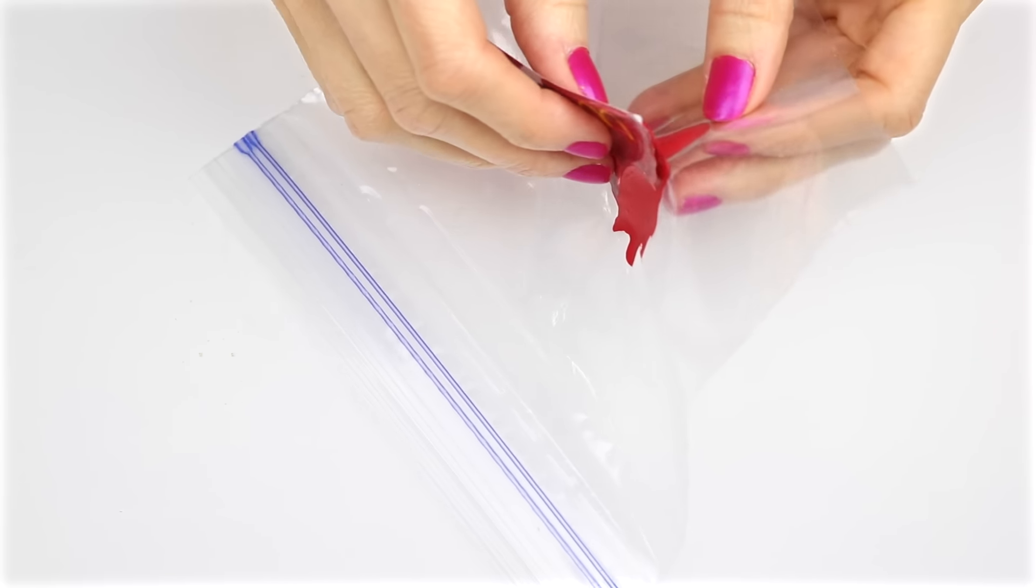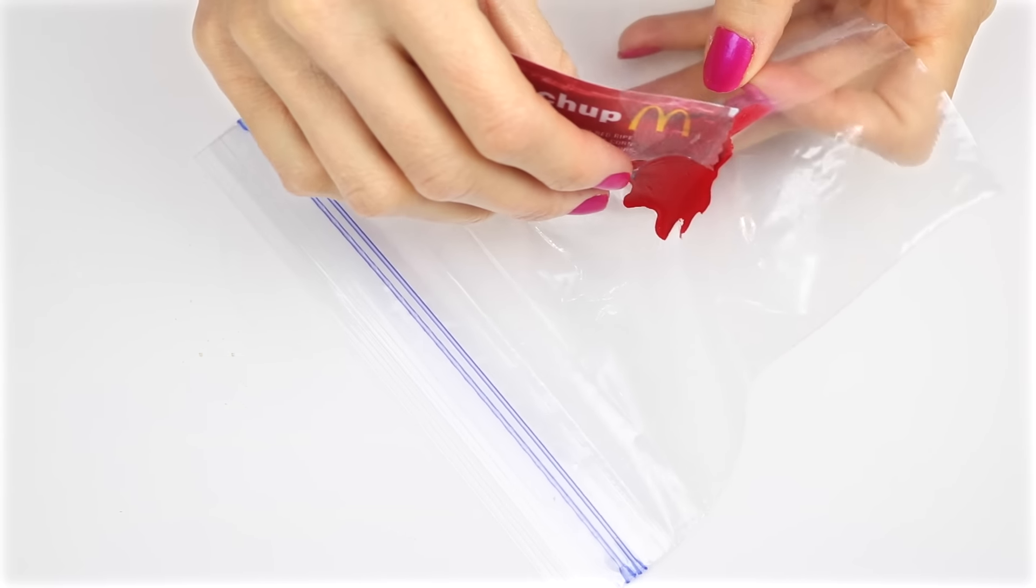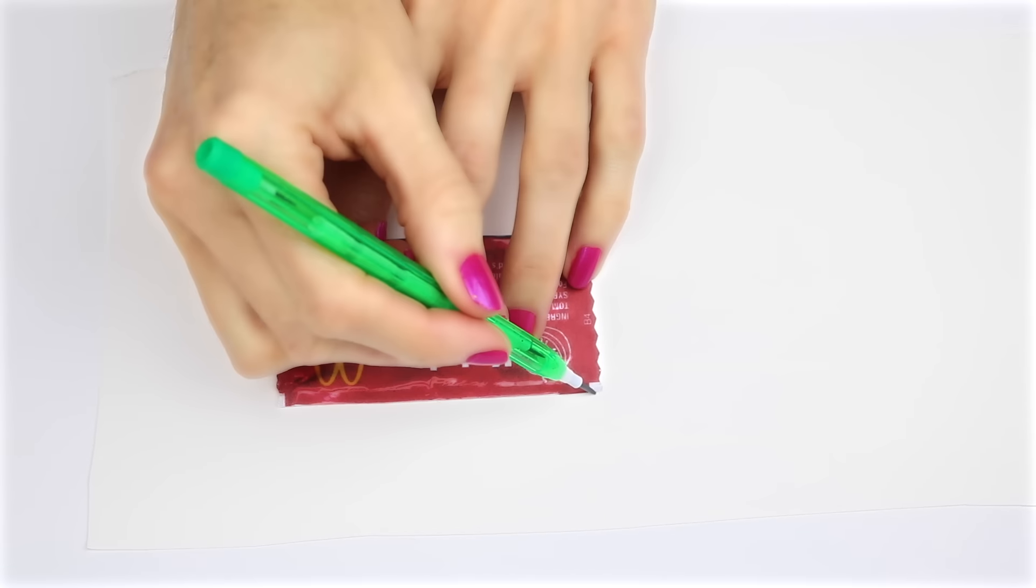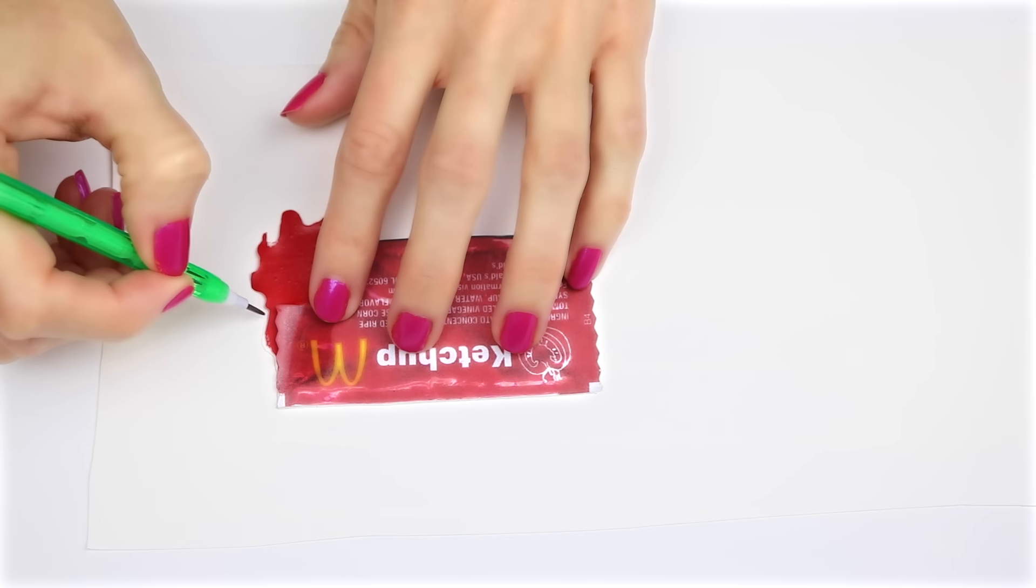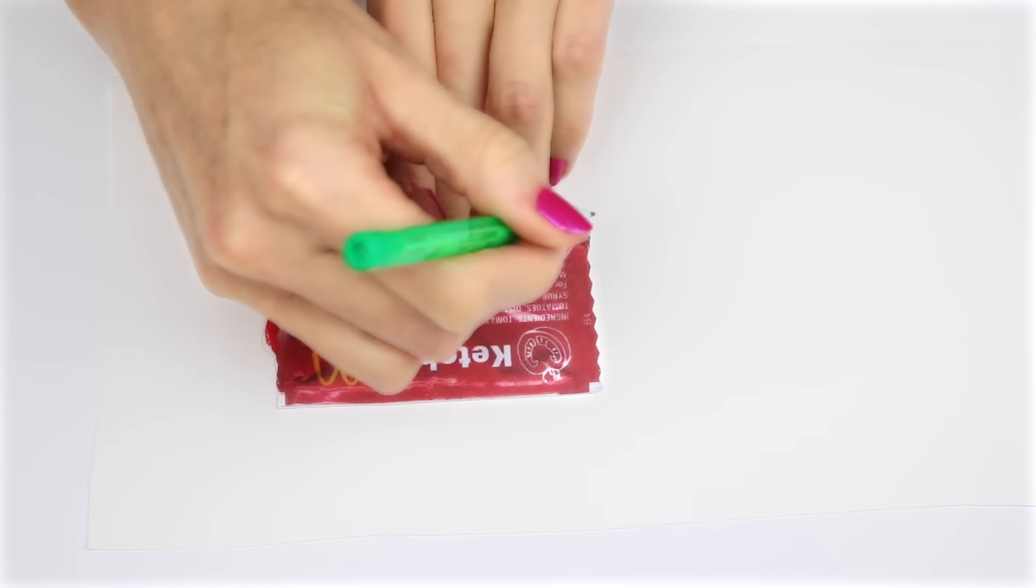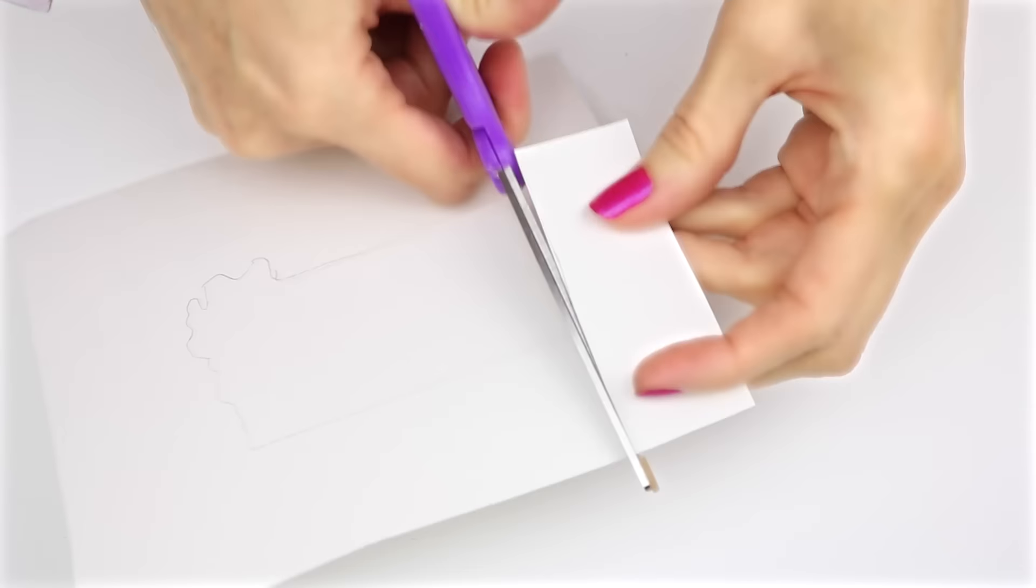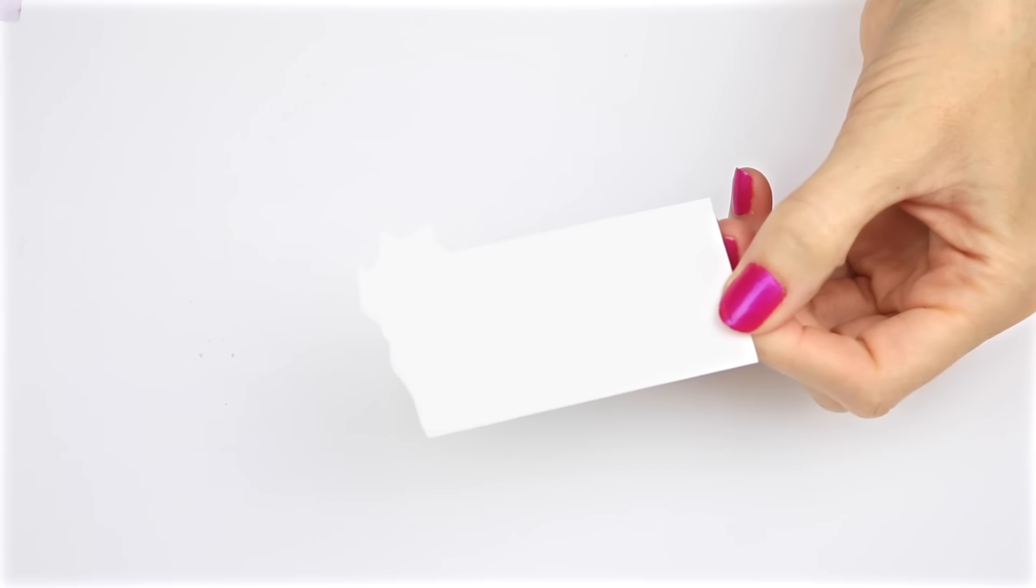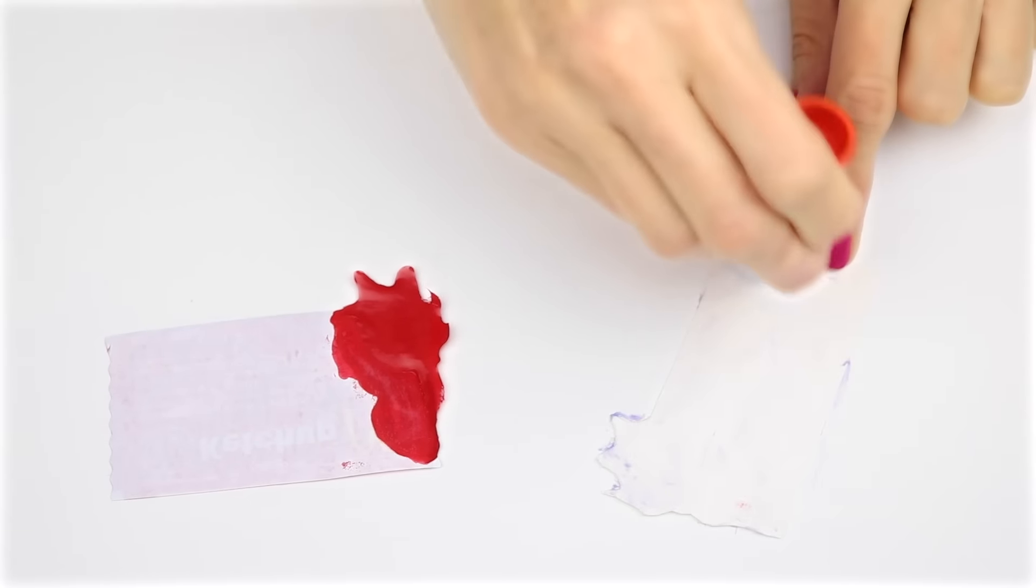Once it's dry, remove it from the plastic bag. To give it some stability, I'm going to use a piece of cardstock. And I'm just going to trace around it and then cut it out. Glue those two pieces together.